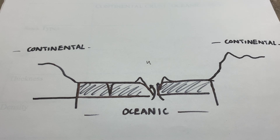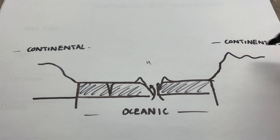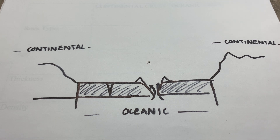When we talk about the Earth's crust, we can broadly sort it into two categories: oceanic crust and continental crust. Oceanic crust is the crust directly beneath the ocean, so you'd usually have water overlying this. And then the continental crust is the stuff that makes up our continents.